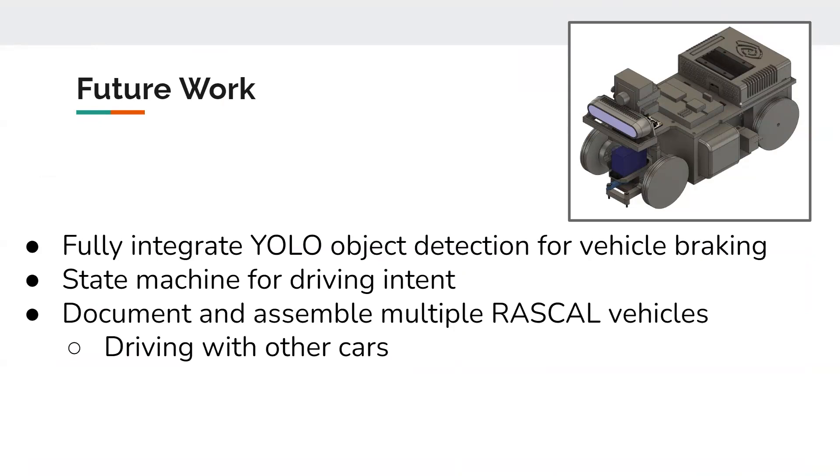Then we would like to add a state machine. Basically, as of right now, the model is only trained to avoid blocked roads. Basically, we have those orange blocks and it should avoid going into the lanes where the orange blocks are placed.